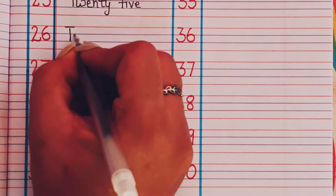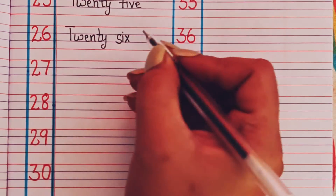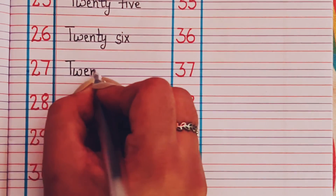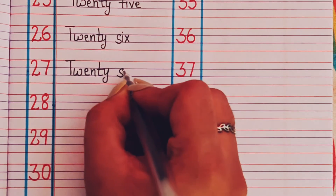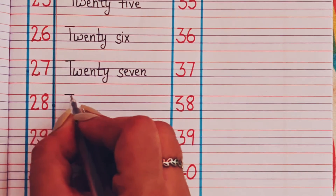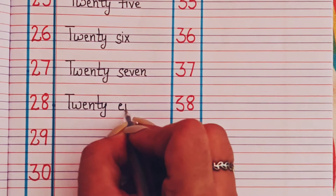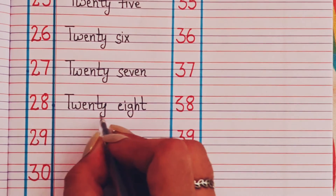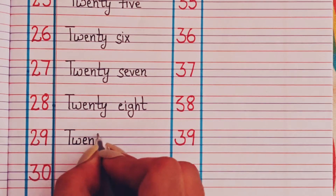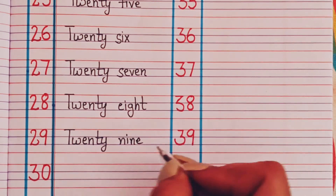26 - T-W-E-N-T-Y S-I-X, 27 - T-W-E-N-T-Y S-E-V-E-N, 28 - T-W-E-N-T-Y E-I-G-H-T, 29 - T-W-E-N-T-Y N-I-N-E, 30 - T-H-I-R-T-Y.